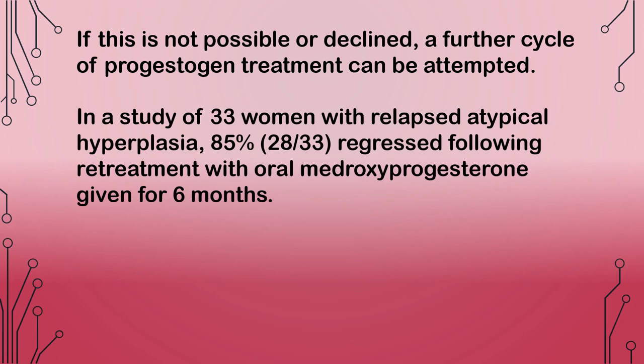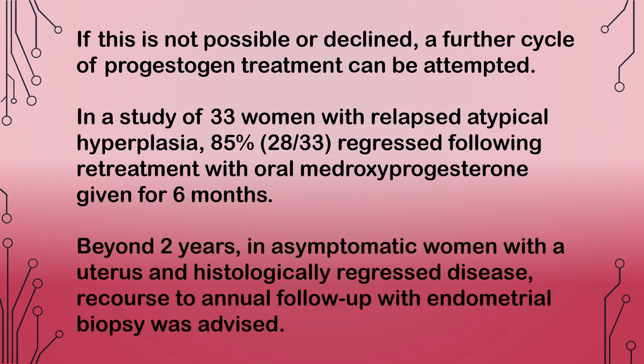In a study of 33 women with relapsed atypical hyperplasia, 85% regressed following retreatment with oral medroxyprogesterone given for 6 months. Beyond 2 years, in asymptomatic women with a uterus and histologically regressed disease, recourse to annual follow-up with endometrial biopsy was advised.